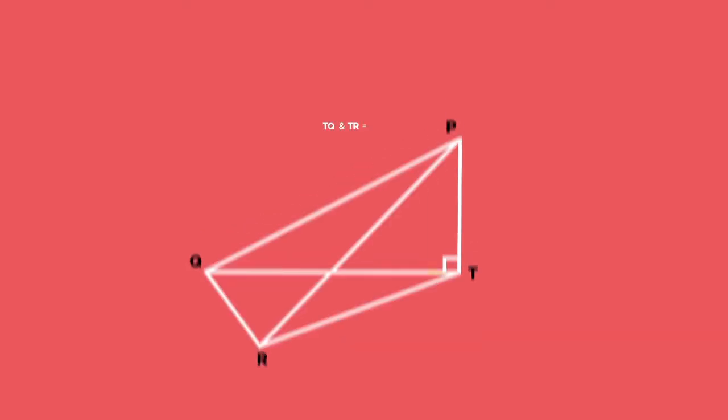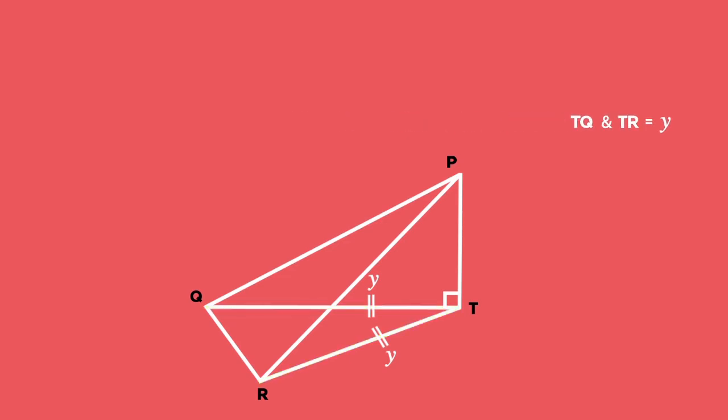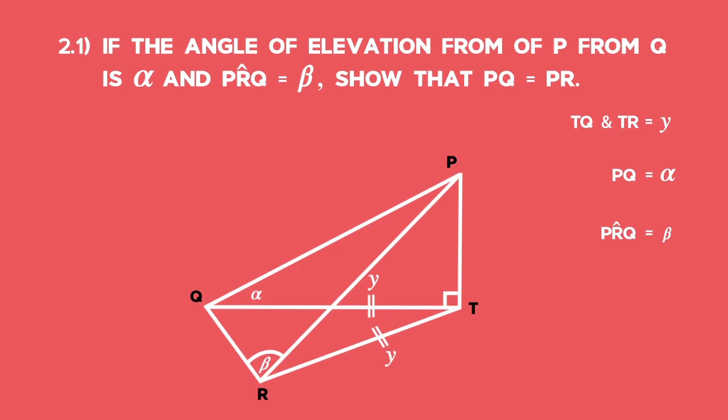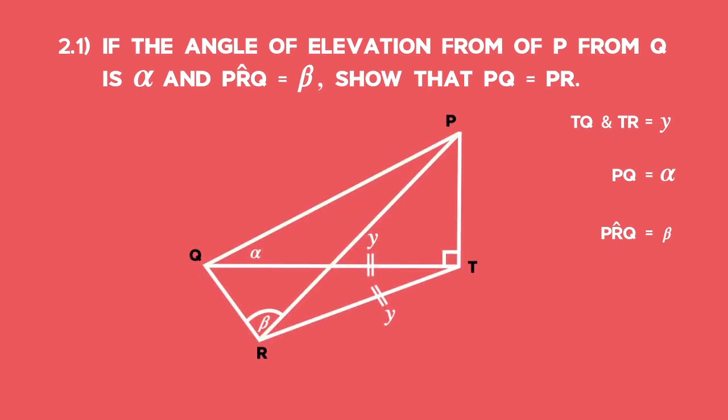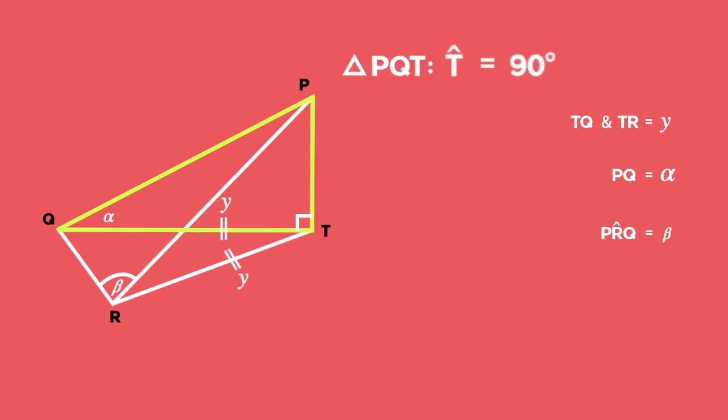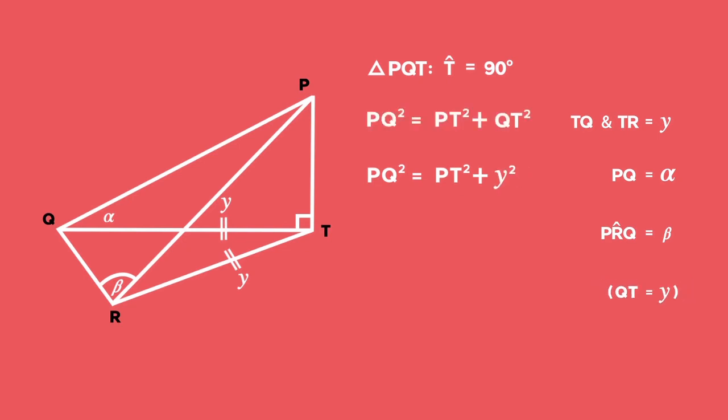Solution. Let's start by filling in the given information on the diagram. TQ and TR are both Y. The angle of elevation of P from Q is alpha and angle PRQ is equal to beta. For 2.1 we need to work in the triangle with the most information to get the length of PQ and the same for PR. In triangle PQT, angle T is 90 degrees. TP is a vertical pole, therefore PT is perpendicular to QT. We can use the theorem of Pythagoras to get PQ squared is equal to PT squared plus QT squared. Since QT is equal to Y, we get PQ squared equals PT squared plus Y squared.